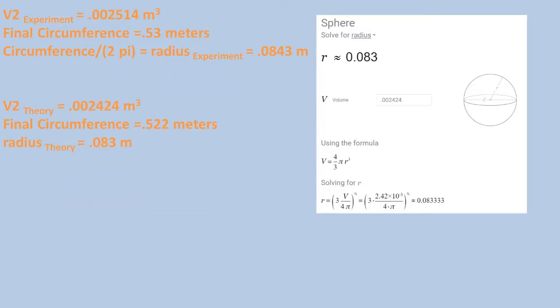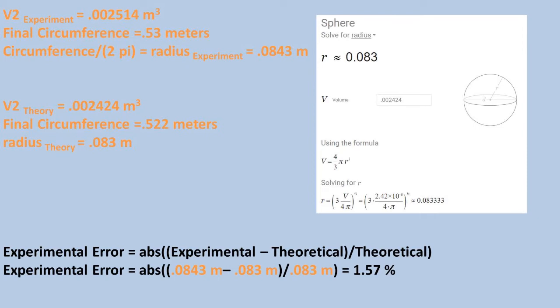So now let's calculate the experimental error. We will convert both the volume two experimental and the volume two theoretical into radius to complete this analysis. Then we will take the absolute value of the experimental radius minus the theoretical radius over the theoretical radius.